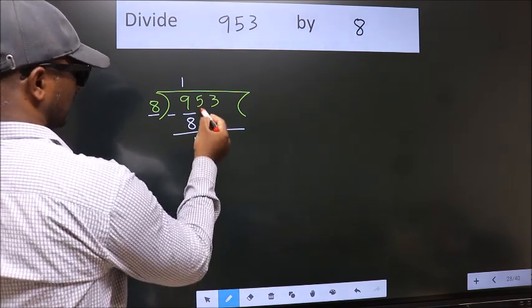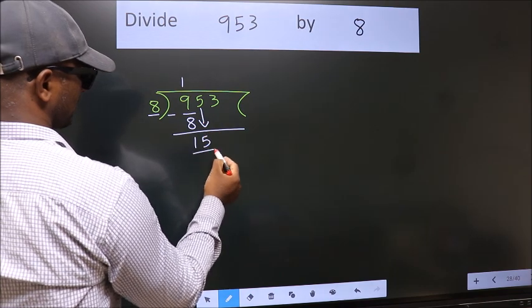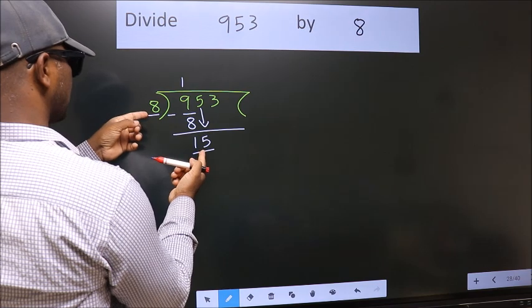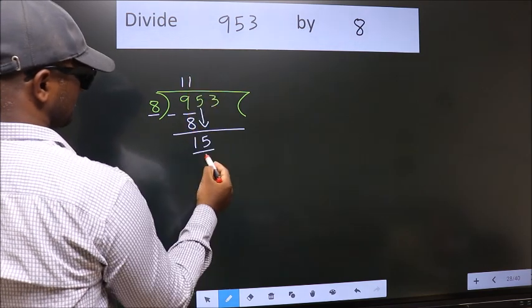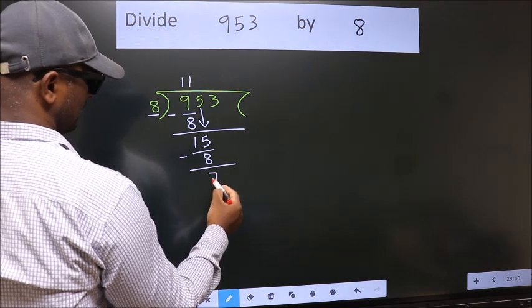After this bring down the beside number. So 5 down. So 15. A number close to 15 in 8 table is 8 once 8. Now we subtract. We get 7.